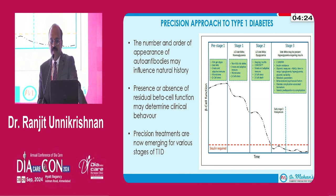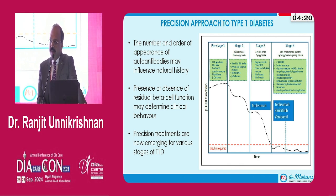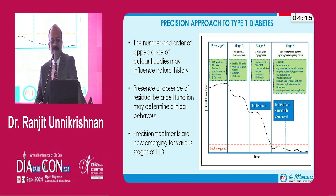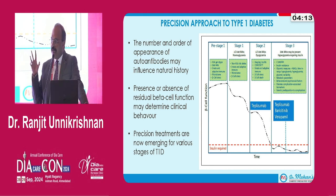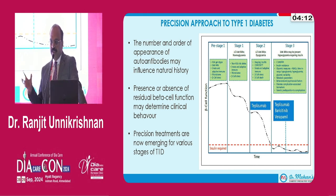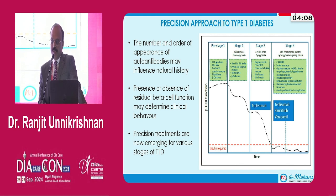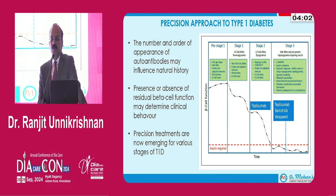Now there are targeted therapies available which can slow down the progression of type 1 diabetes, either from stage 2 to stage 3, or in early stage 3 to prevent further loss of beta cell function. We have the monoclonal antibody teplizumab, the JAK kinase inhibitor baricitinib, and the calcium channel blocker verapamil. We need to characterize our patients to decide who are the best candidates for these treatments, since many of these are expensive and not free of side effects.